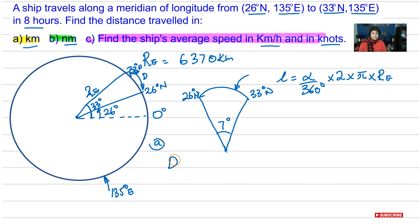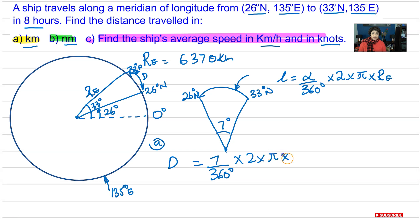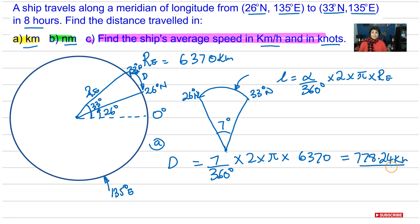So distance from 26 to 33 degrees north in kilometres — this is Part A — is going to be equal to our alpha, the angular difference between the two latitudes, which is 7 degrees, divided by 360 degrees, times 2 times pi, times the radius of the Earth, 6,370 kilometres. This gives us 778.24 kilometres.